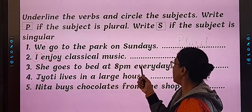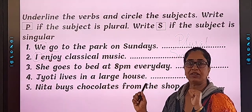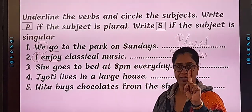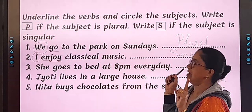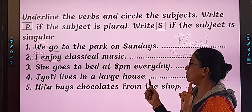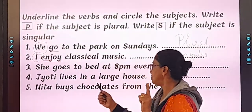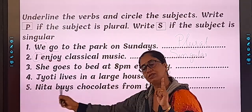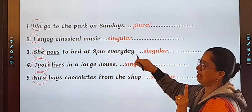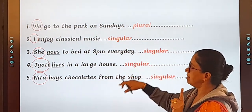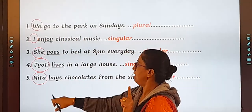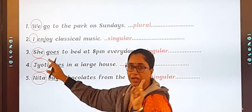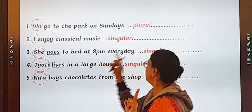She goes to bed at 8 p.m. every day. Underline the action word. Done. Circle the subject. She. It is single. So what will you write? S. Jyoti lives in a large house. Do it on your own. Neeta buys chocolates from the shop. Underline the verb, circle the subject, and is it singular or plural? Check your answers. Have you done it like this? Circle all the subjects, underline all the verbs. We - plural. I - singular. She - singular. Jyoti - singular. Neeta - singular. That's done.